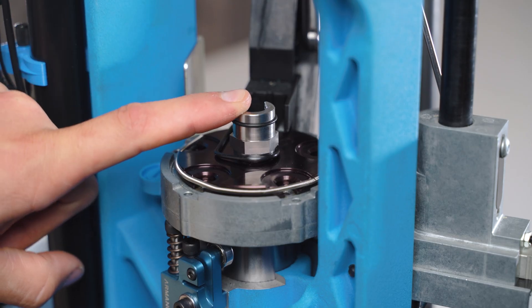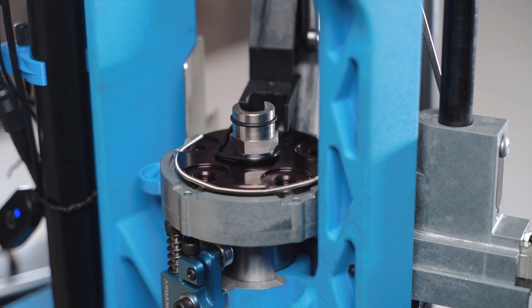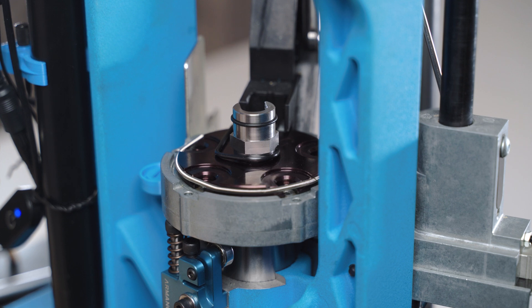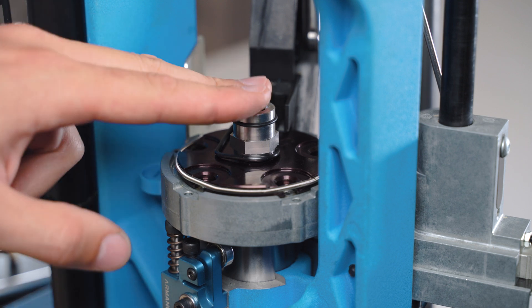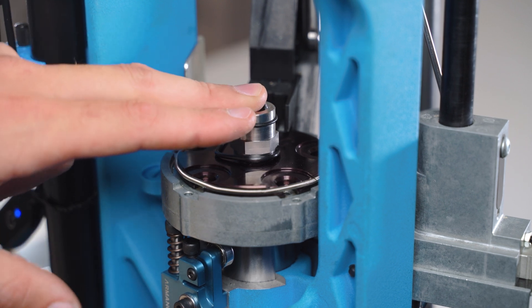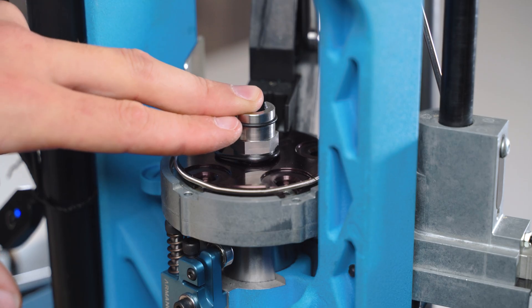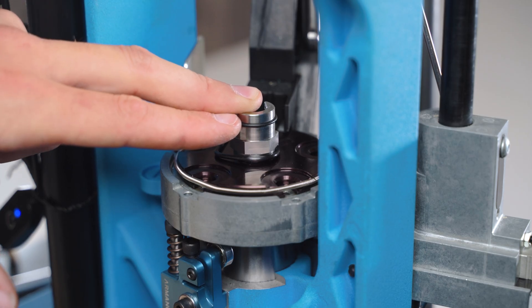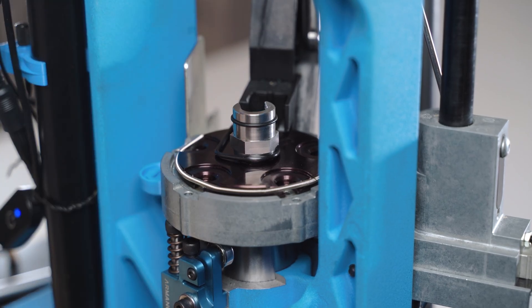When satisfied, tighten the retaining screw underneath the shell plate. Now that we have adjusted the main shell plate bolt, we can leave it in place when secured, and this will stay regardless if you are using the press as a progressive reloading press or if you will use the single stage conversion kit. Once installed you do not have to change it again.